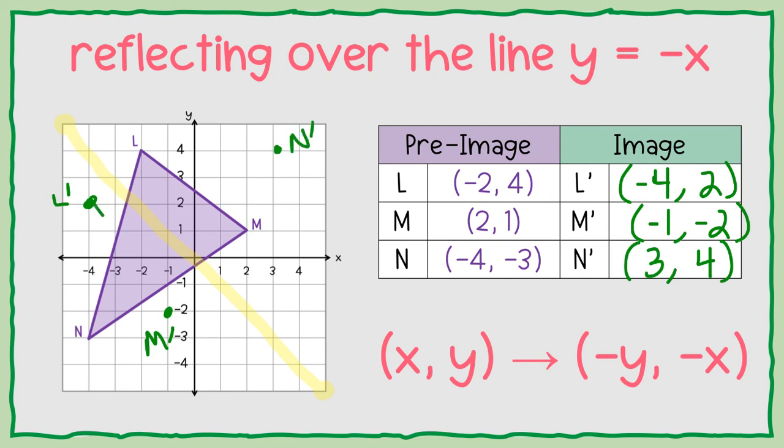Let's connect our vertex. And that is triangle LMN reflected over the diagonal line y equals negative x.